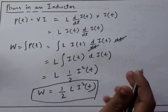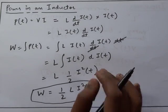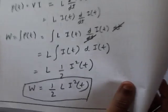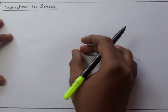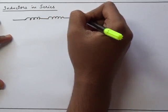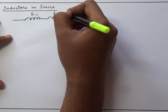So a general equation for energy stored in an inductor will be W = (1/2)·L·I²(t). Next we will be seeing how to calculate the inductance when they are connected in series as well as in parallel.